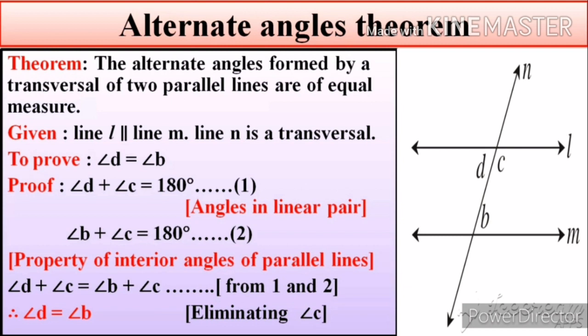From the two equations, we get angle D plus angle C equal to angle B plus angle C. Eliminating angle C from both sides, we get angle D is equal to angle B.